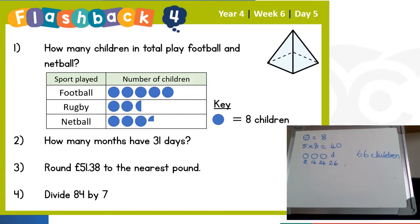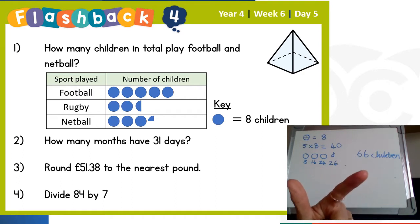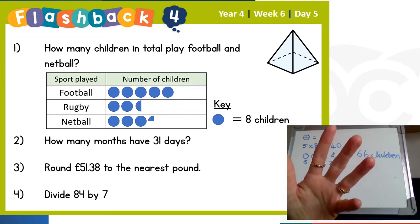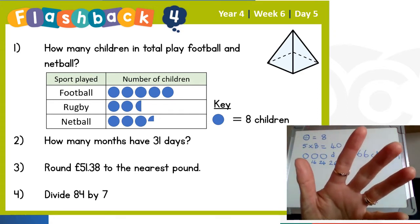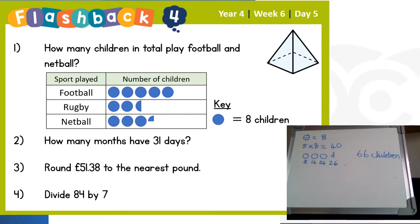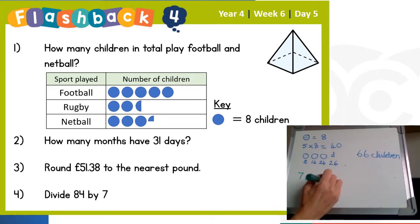Now the months of the year — there are twelve. The rhyme tells us: '30 days have September, April, June and November; all the rest have 31, except for February alone, which has 28 and 29 in a leap year.' So apart from those five months, all the rest have 31. That's 12 take away five — seven months have 31 days.